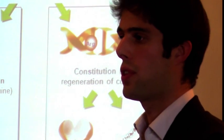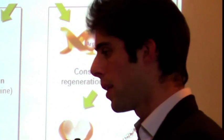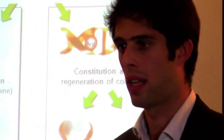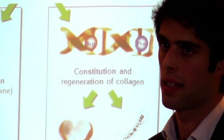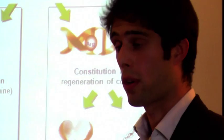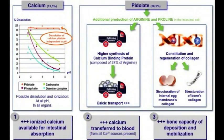If you have good bone deposition — and that's what we are trying to do on pullets — if you have good bone deposition or good bone regeneration, then you will have more calcium availability but also more arginine availability for the internal membrane of the egg, giving you better eggshell quality. More collagen for the membrane, more calcium for the eggshell, so you have a better resistance of your eggshell. To summarize the action of pidoate: more availability, more transport, and more bone capacity for mobilization and demobilization of calcium.